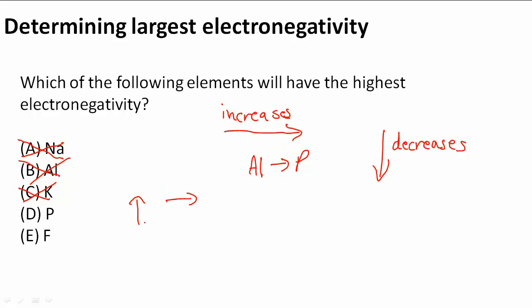And also when you go up, it goes the opposite of when you go down, so it also increases. That must mean that F is actually the answer we're looking for because it increases in this direction and also as we go to the right. So E is the answer to this problem.